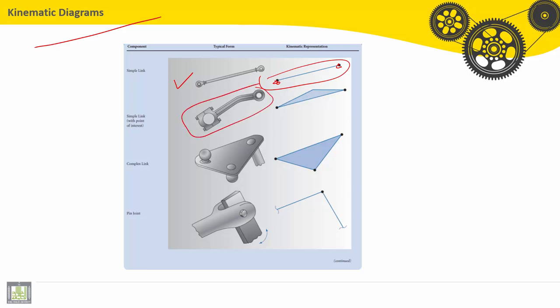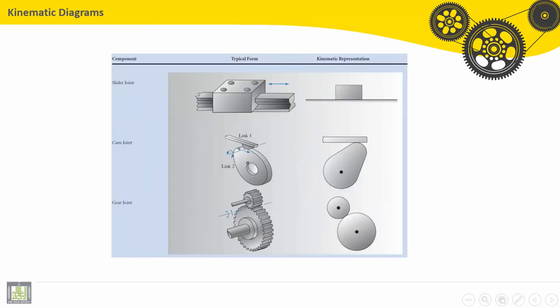The simple shape for a link is a triangle with two joints. For a complex link, it is the general shape, also as a triangle, but we have the positions of joints here. For a pin joint, for example, just two lines joined here.